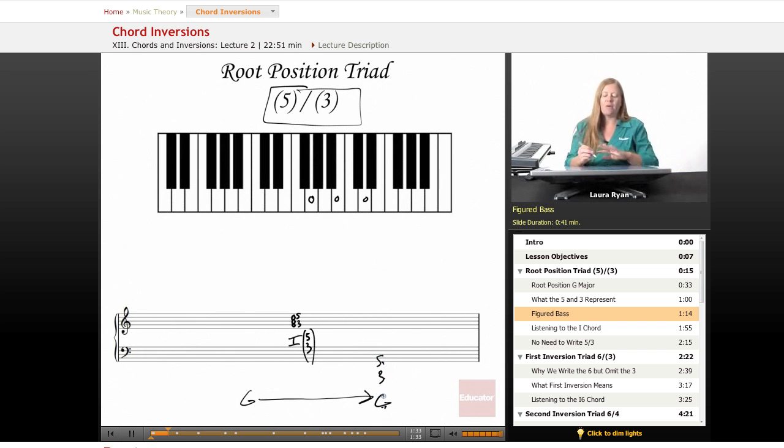So we don't need to write five and three for capital Roman numeral one in the key of G, because when you have this you understand that the third interval and the fifth interval are already there. This capital one in the key of G tells you that you are going to be playing a one chord in the key of G.